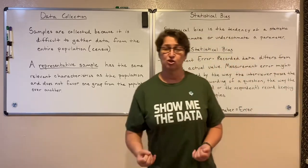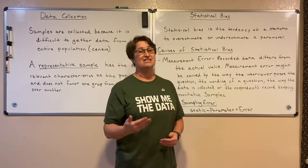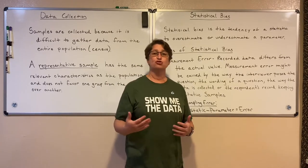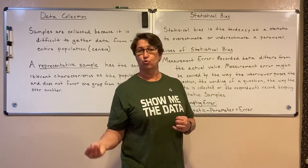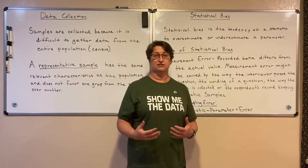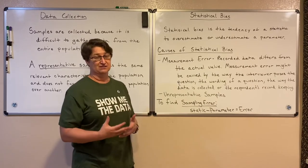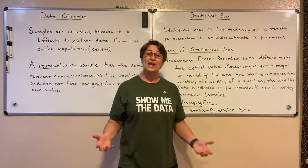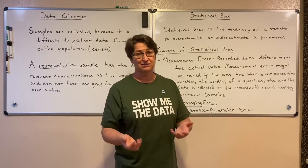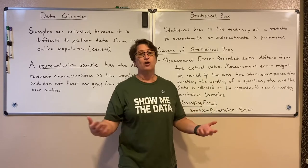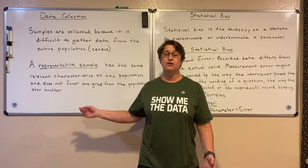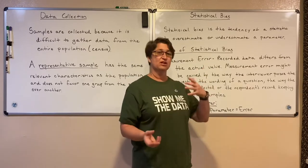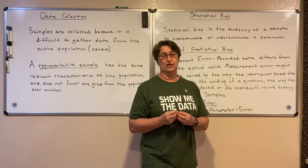Statistical bias in statistics is different than just the word bias that we typically think of. When we typically think of bias, we think of having some personal reason to favor one group over another. That's not how it is in statistics. Statistical bias is just the tendency of a statistic to overestimate or underestimate a parameter. When I collect data from a sample, there is a tendency for that sample to be a little different from the whole population — for our statistic to be a little bit more or a little bit less than that parameter.